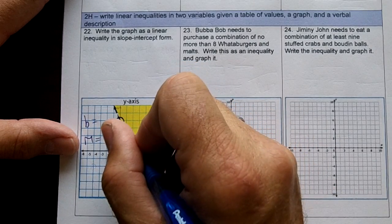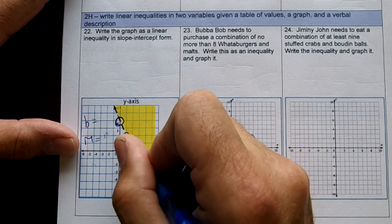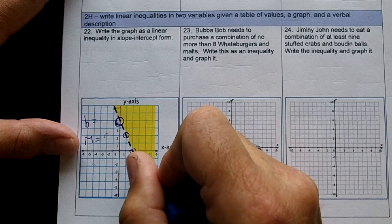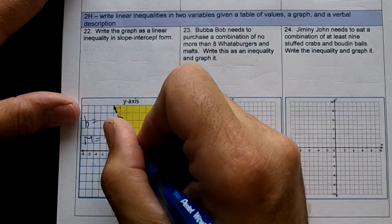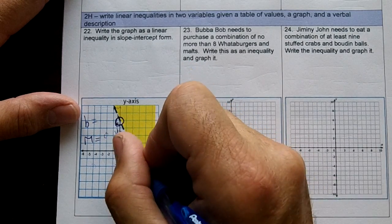So this line doesn't cross the grid point here, but it crosses here. It crosses here. It crosses here, and it crosses here. Just do enough to get a pattern, and I'm going down two, right one every time, aren't I?